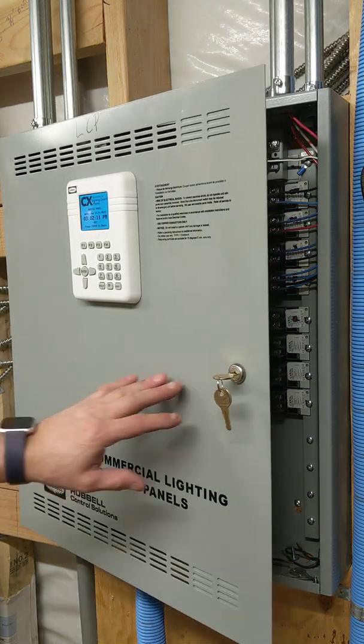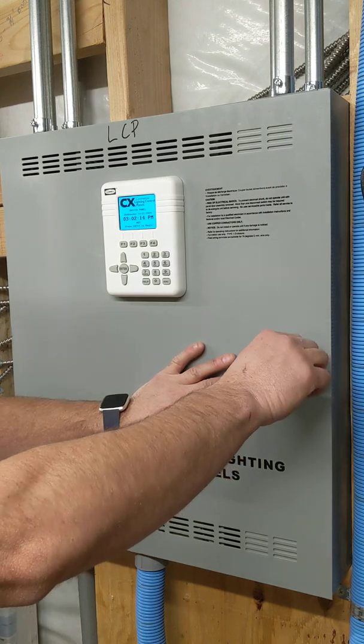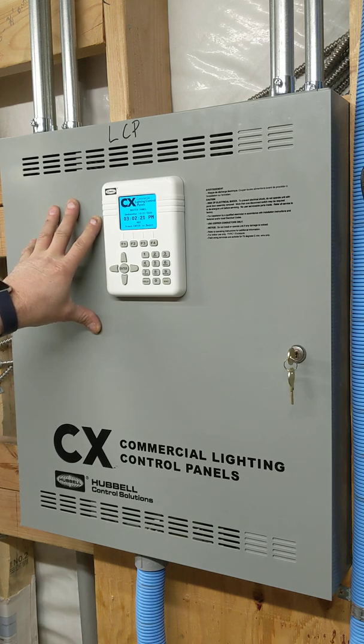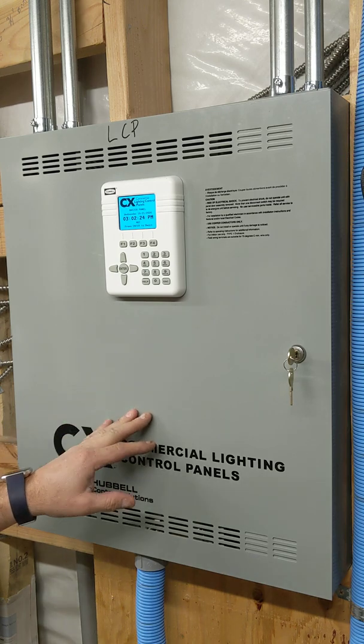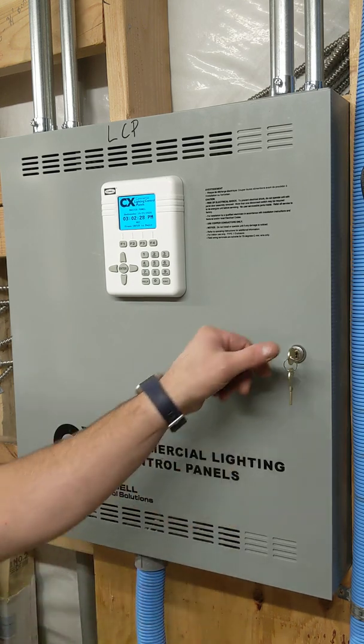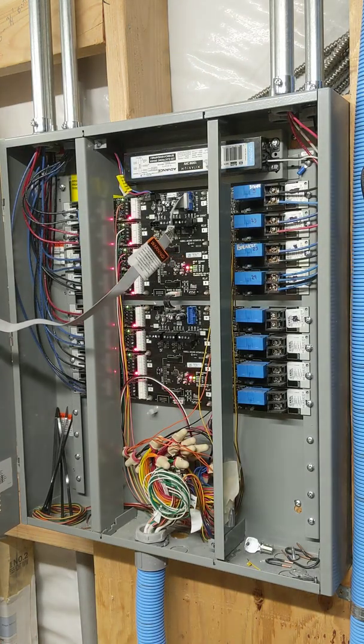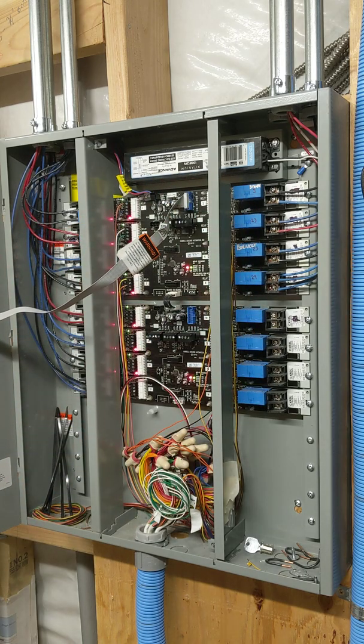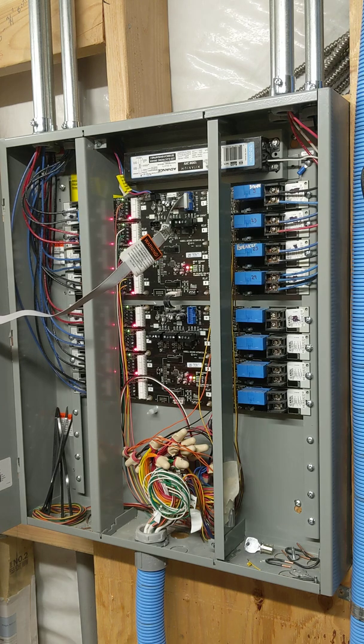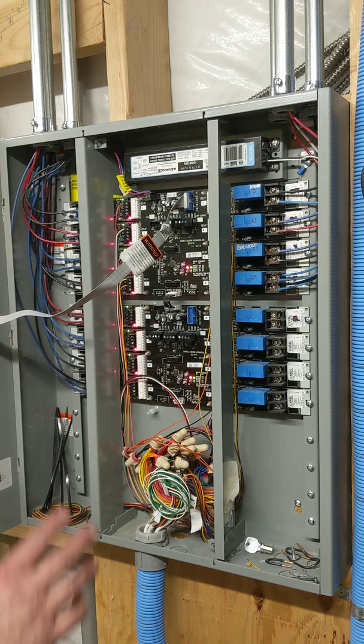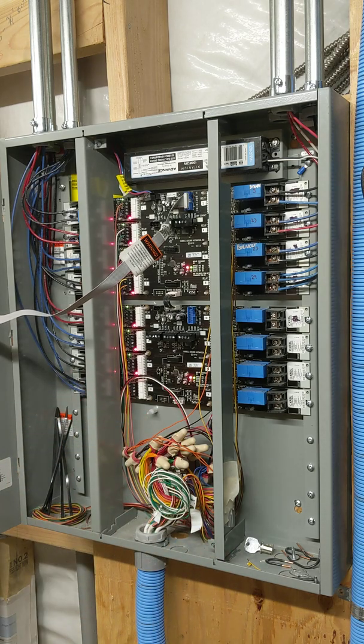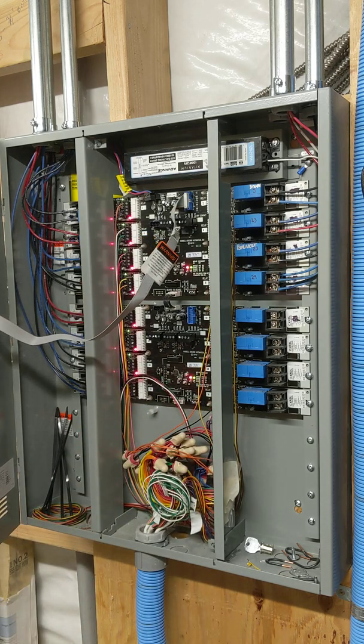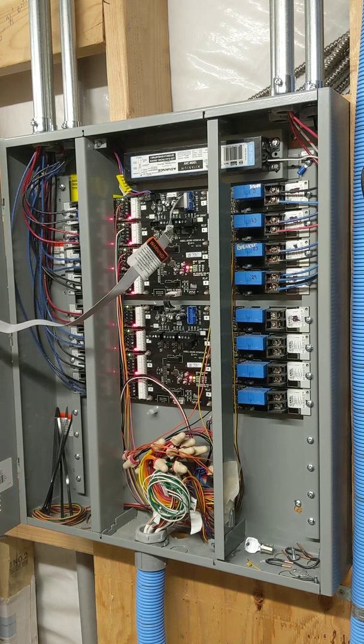All right, so I thought this would be a useful video because I haven't done any good technical ones in a really long time. So this is a Hubble CX commercial lighting control panel. I found that when I installed this panel it was complicated to program because I didn't quite understand. The manual doesn't give a very good detailed explanation on how this all incorporates and works together. So it was kind of frustrating, sort of like a big learning curve for me.